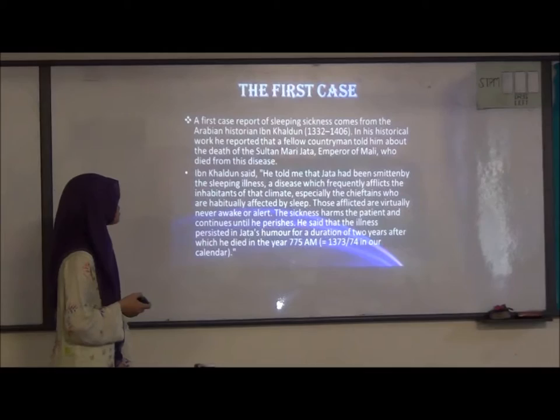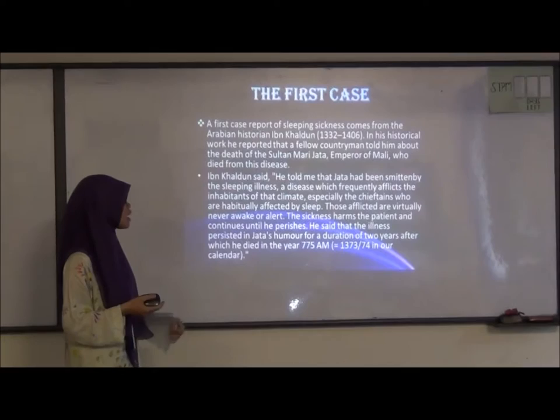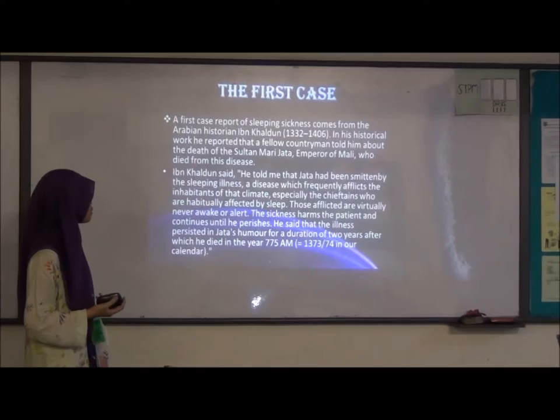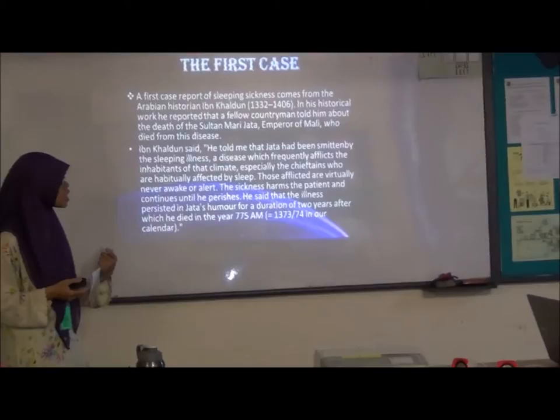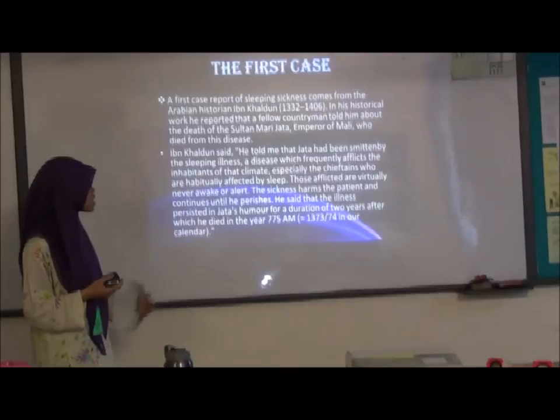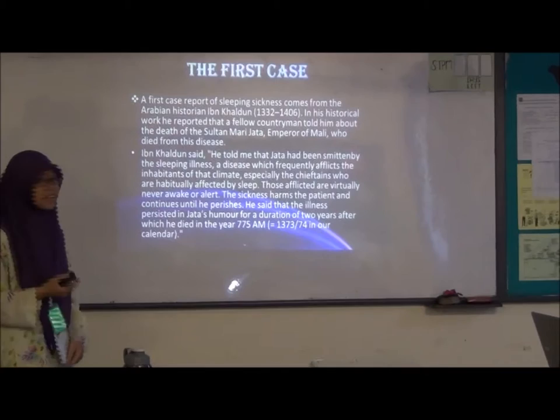People who want to go into the jungle must be injected with a dose of suramine every six months so they will not be infected. Another prevention — though difficult — is the occasional relocation of a village to a disease-free zone. Historically, an Arabian historian reported that Sultan Mari Jata, an emperor of Mali, died from this disease after the illness persisted for two years.